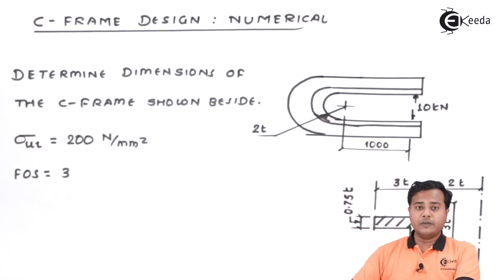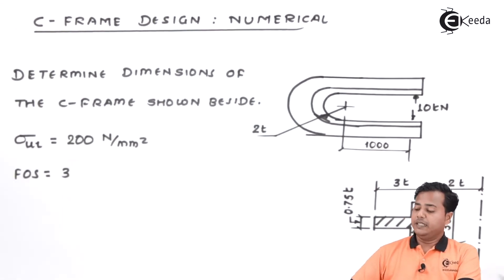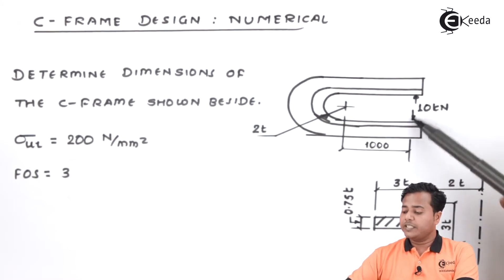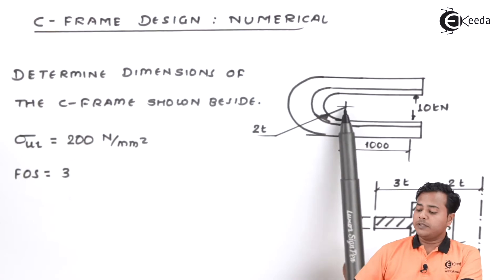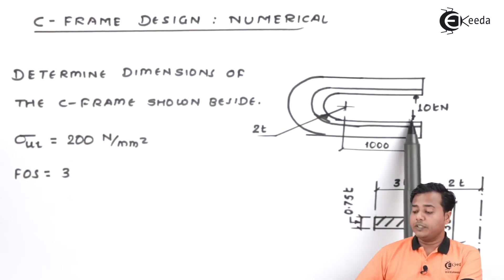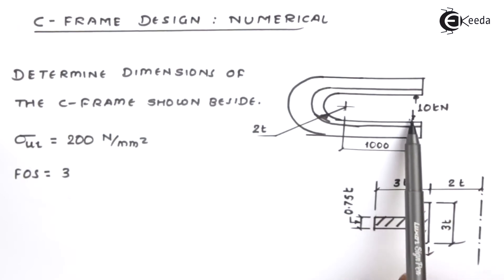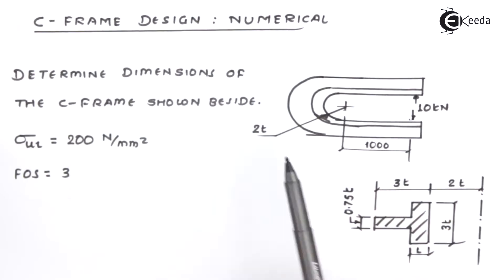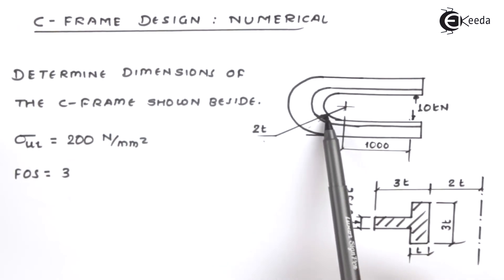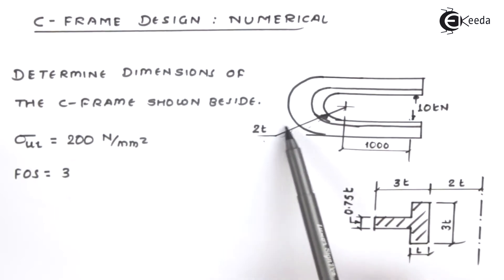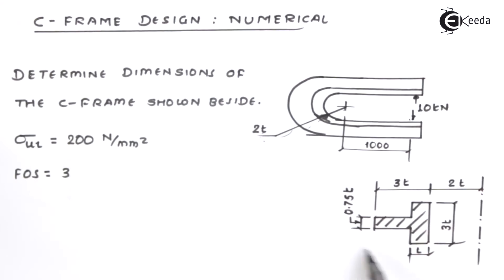This is a C-frame which we are familiar with, given with a T cross-section. The load the C-frame is going to support is 10 kilo Newton. The distance between the center point of curvature and the point of load application is 1000 millimeters. The thickness term is given for the inner radius, where the inner radius is basically twice the thickness t.